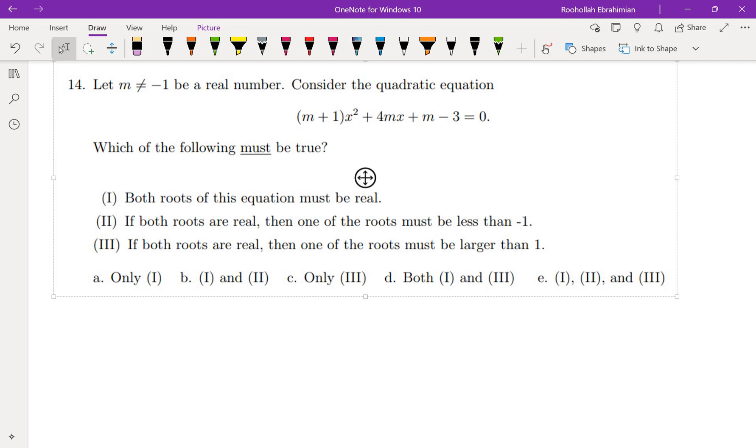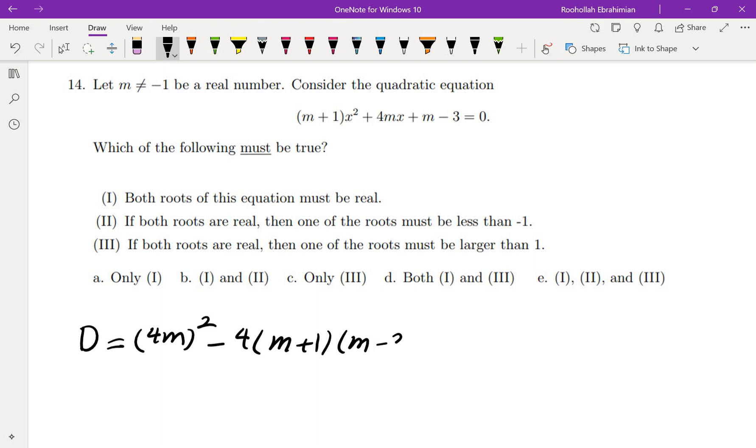We want to understand whether the roots are real or not. We will have to look at the discriminant. So the discriminant is b² - 4ac. This gives us 16m² - 4(m² - 2m - 3).